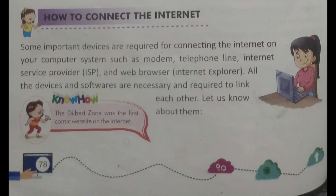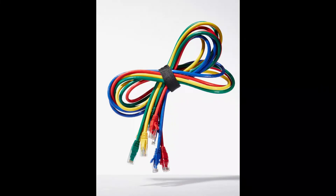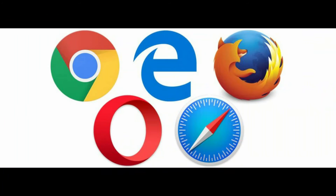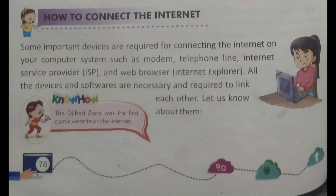So these are all the devices and software needed to connect to the internet. The first one is the modem, after that the telephone line, then the internet service provider or ISP, and the last one is the web browser. These are the four main things needed for connecting our computer to the internet. You have to remember these four things. All these devices and software have to be linked together — if they are not connected to each other, the proper internet connection will not be there.